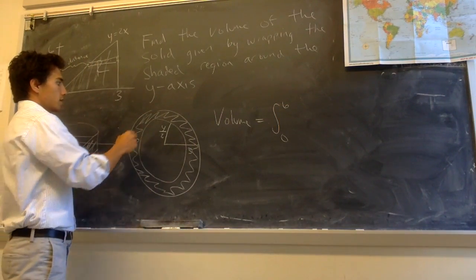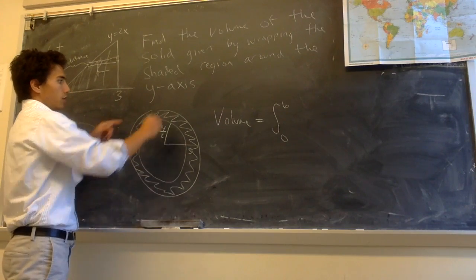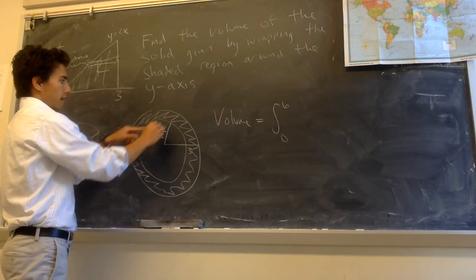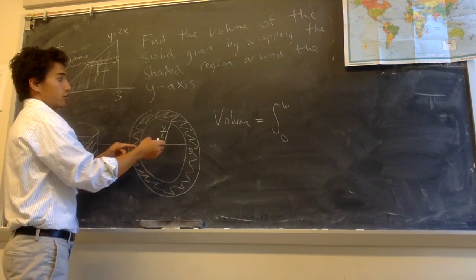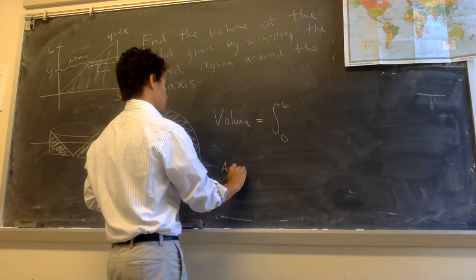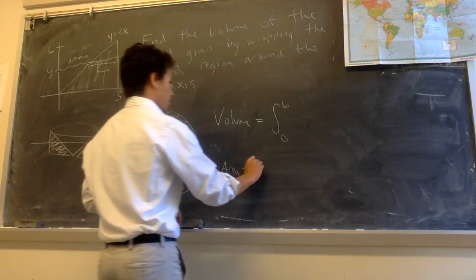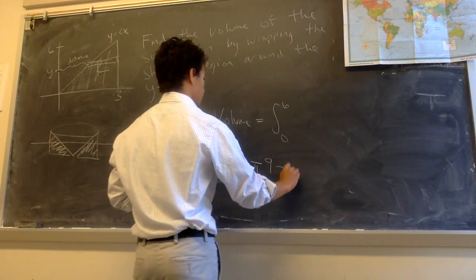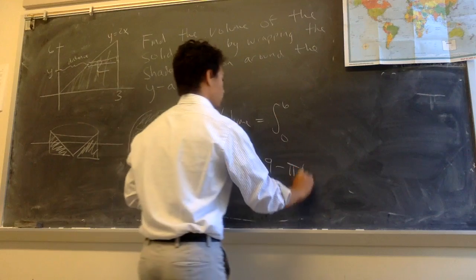And now what is the area of this cross-section? Well it's the area of the outer circle minus the area of the inner circle. So the area here is pi times 3 squared minus pi times y over 2 squared.